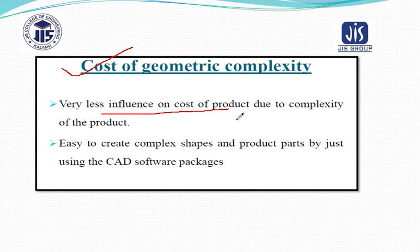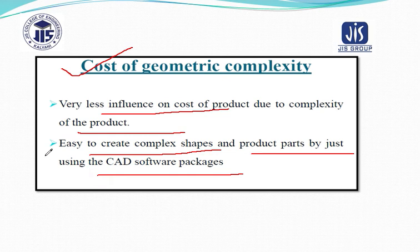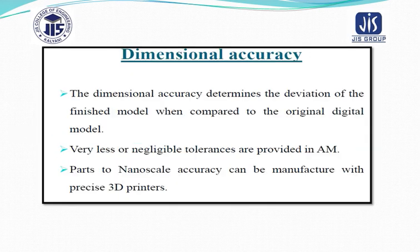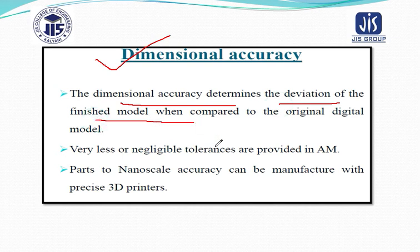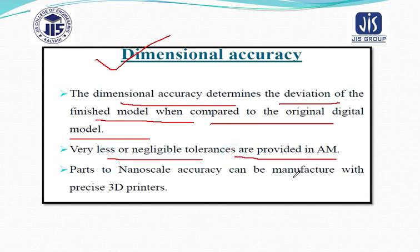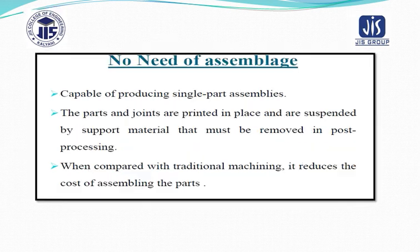Regarding cost of geometric complexity: there is very little influence on the cost of the product due to complexity. It is easy to create complex shapes and parts can be produced by just using CAD software packages. Regarding dimensional accuracy: dimensional accuracy determines the deviation of the finished model when compared to the original digital model. Very less or negligible tolerances are provided in additive manufacturing parts, and nano-scale accuracy can also be achieved with precise 3D printers.